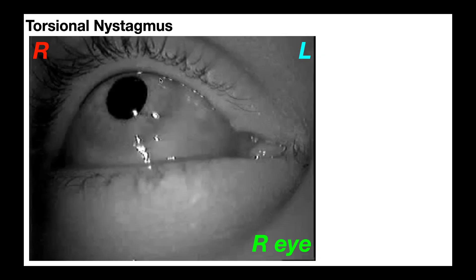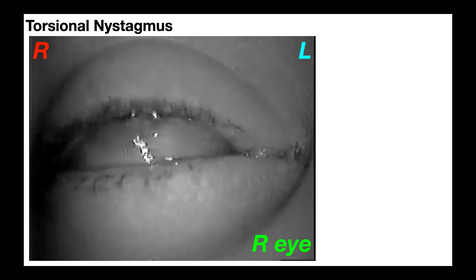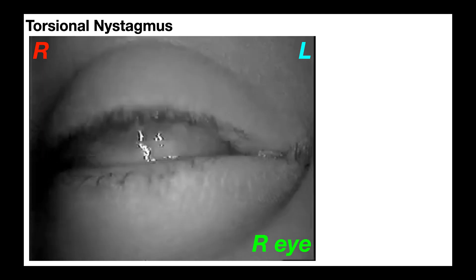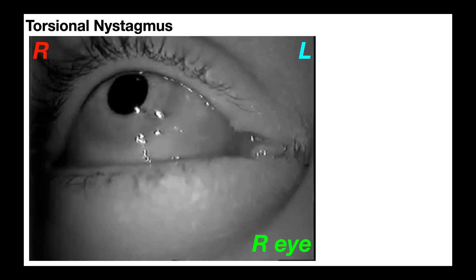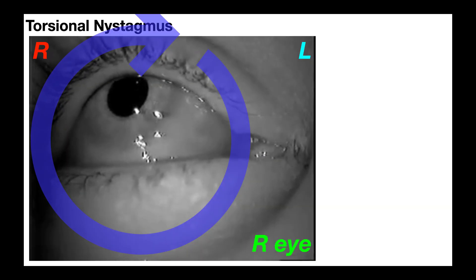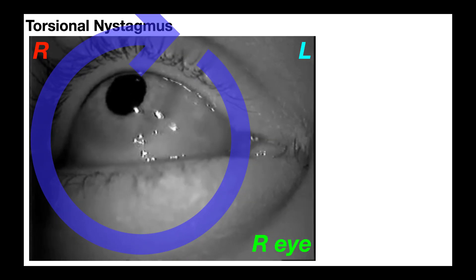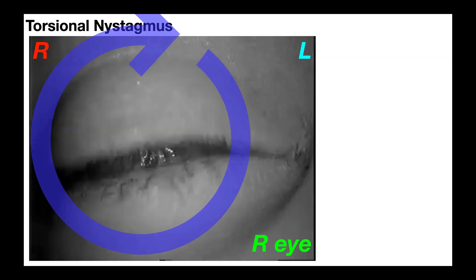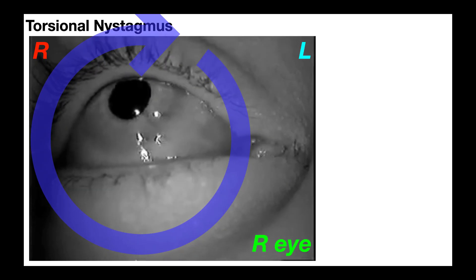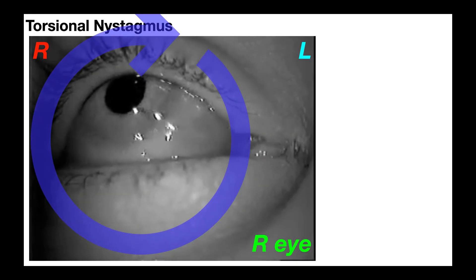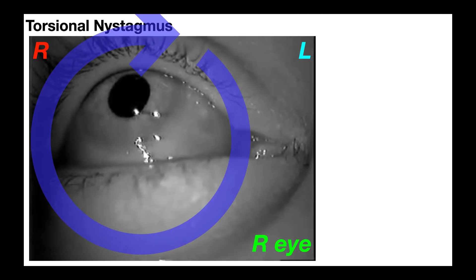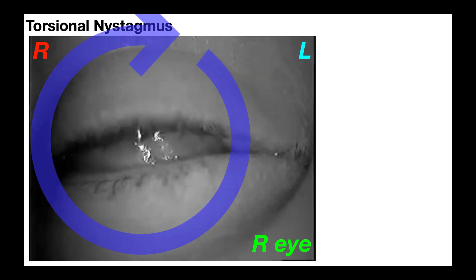Remember, with interpreting torsion we're considering the superior part of the eye — either the iris or the sclera. Hopefully you can see the torsion right there. Is this left torsion or right torsion? The fast beat of the torsion was going in the direction of that blue arrow. Looking at the top part of the eyeball, the direction of torsion is toward the left. So this would be left torsional nystagmus — and the left eye should also be undergoing left torsion.